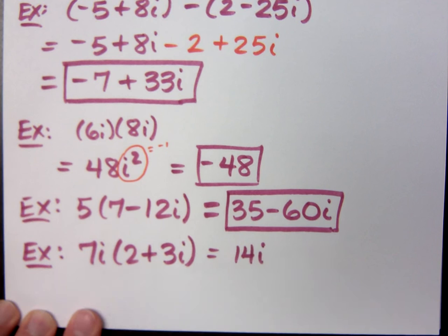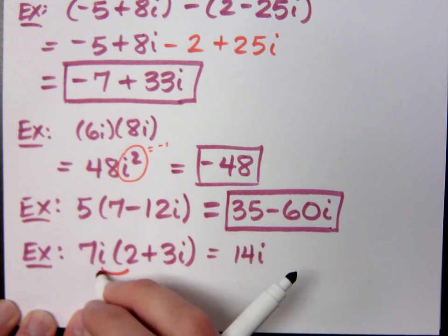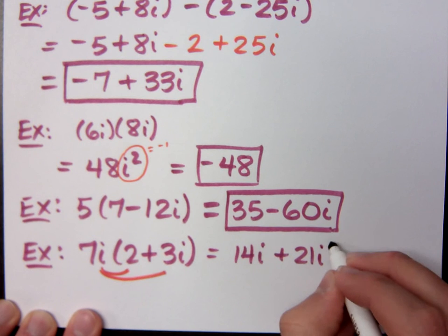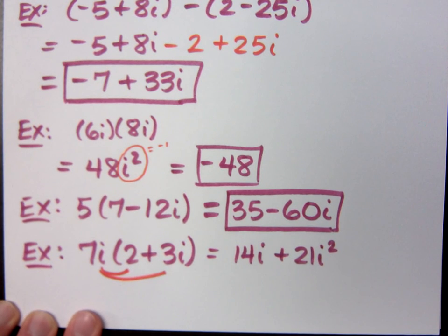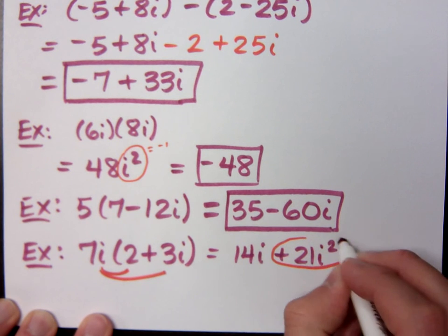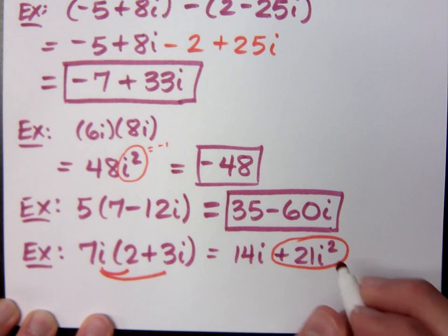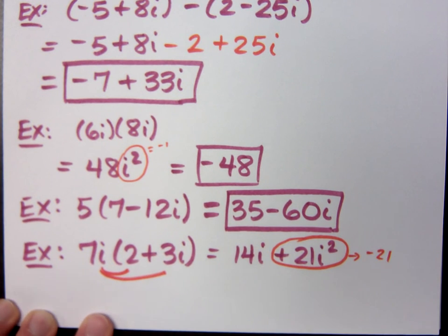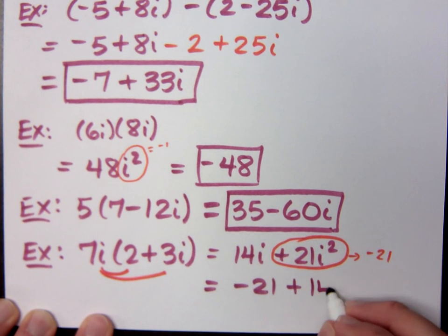How about 7i times the quantity 2 plus 3i? That's 14i, so we're just distributing here, plus 21i squared. Now, this guy right here, this plus 21i squared. Jinx, you owe me a Coke. 21i squared would become a negative 21, but you have to put things in the correct order, which is real, negative 21, plus the imaginary part, 14i.